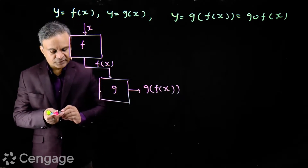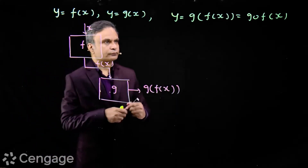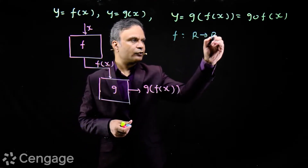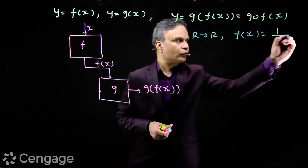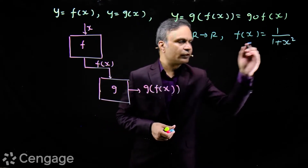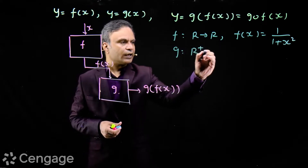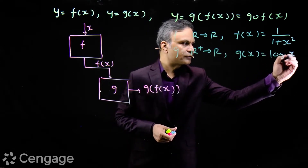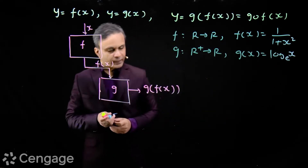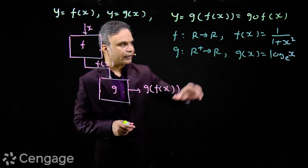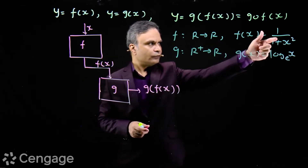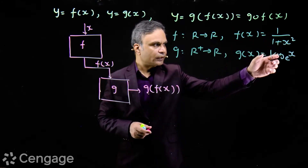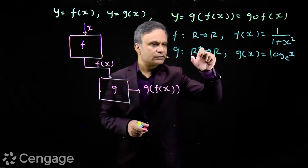Let us consider some examples. Consider function f from set R to R where f(x) = 1/(1 + x²), and function g from R⁺ to R where g(x) = log x. Here we have the actual domains of the functions. The domain of f is R — this is the exhaustive domain of this function — and the exhaustive domain of g(x) = log x is R⁺.